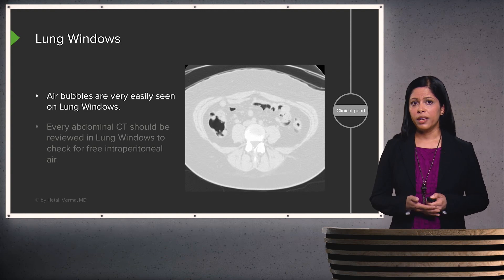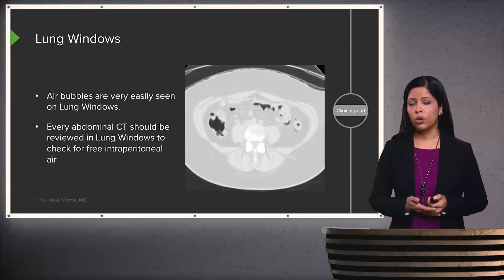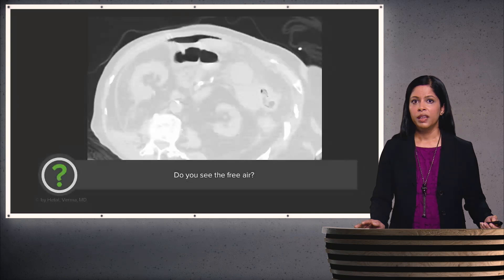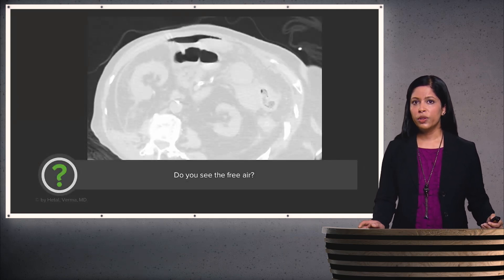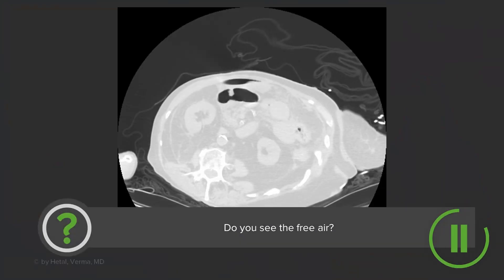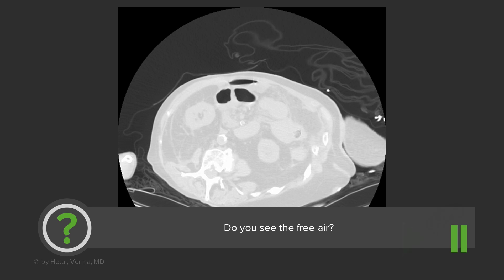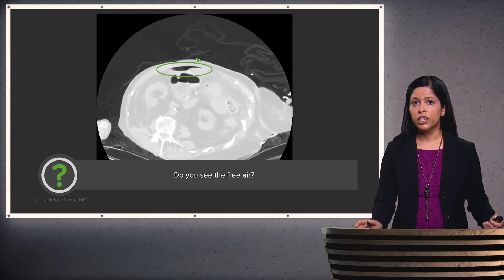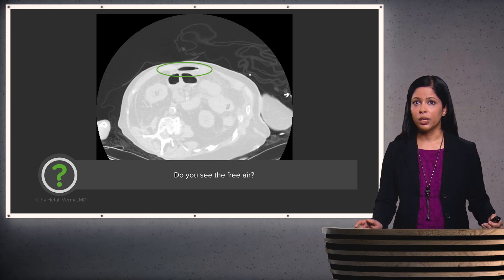Lung windows are very useful in identifying small air bubbles. Every abdominal CT should be evaluated in lung windows to look for free intraperitoneal air or abnormal collections of air. On this single slice, you can see air located within the bowel. When identifying free air, compare it with air located in the bowel wall — the free air is outside of any structure, whereas bowel air follows the bowel wall. This is how you identify free air when looking through lung windows.